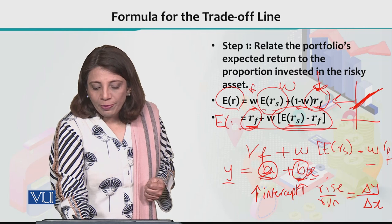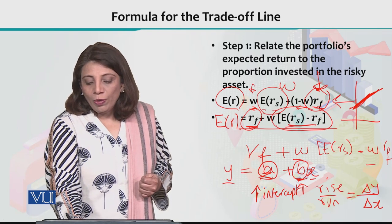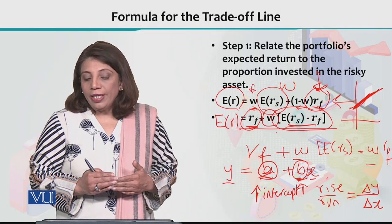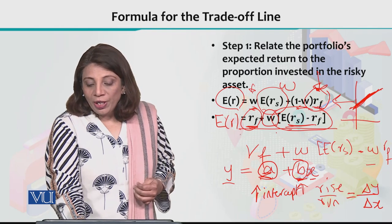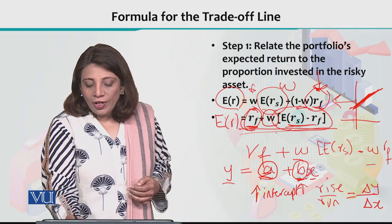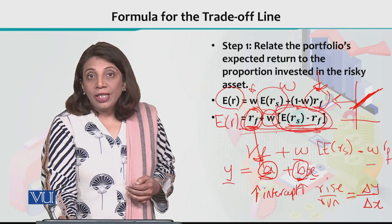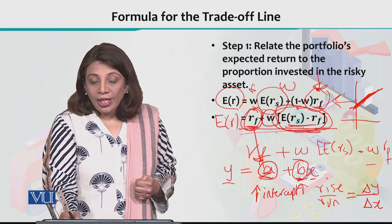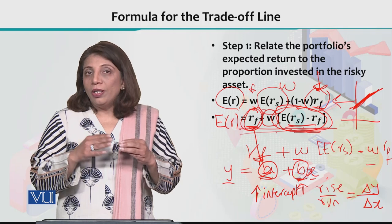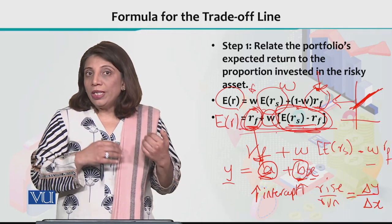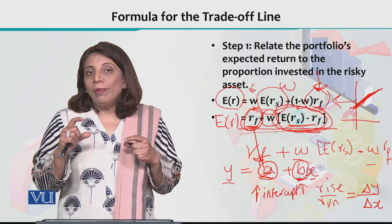So the formula we derived is: Expected rate of return equals RF (the risk-free return, which is the intercept), plus W (the proportion of total investment in the risky asset) times the bracket (expected rate of return from the risky asset minus RF). The term ERS minus RF is called the risk premium — the additional return you earn for taking on risk beyond the risk-free asset.